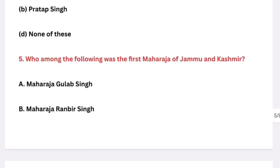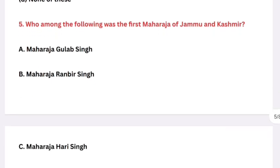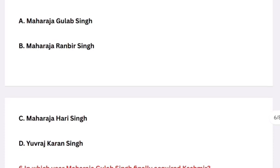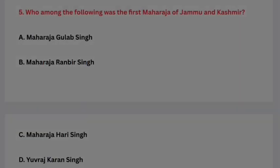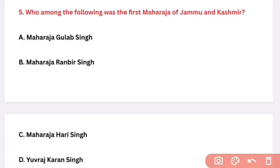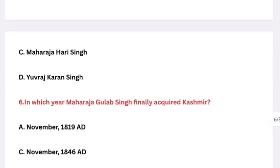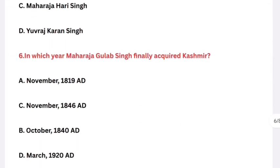Question: Who among the following was the first Maharaja of Jammu and Kashmir? Options: Maharaja Gulab Singh, Maharaja Rambir Singh, Maharaja Hari Singh, Yuvaraj Karan Singh. The right answer is option A — Maharaja Gulab Singh was the first Maharaja of Jammu and Kashmir. Next question: In which year did Maharaja Gulab Singh finally acquire Kashmir? The right answer is November 1846.